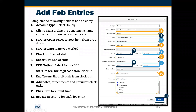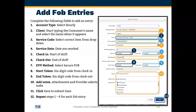Select the correct service code from the dropdown, then select the date that you worked — your service date. Select your check-in and check-out times, which is simply your clock-in and clock-out time — the start and end of your shift. To enter a FOB entry, select 'Secure FOB' as the EVV method. That will bring up the start token and end token fields, where you will enter the start and end token from the FOB that you recorded at the time of clock-in and clock-out.